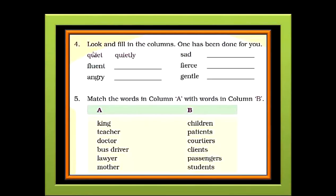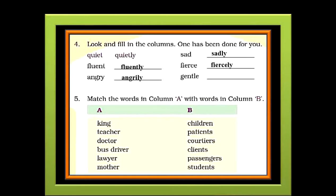Now children, the next exercise is look and fill the columns. One has been done for you. The word quiet becomes quietly by adding 'ly'. So this is the clue here, children. You need to add 'ly' to all the words given here. By adding 'ly' to the word fluent, we get fluently. Similarly, by adding 'ly' to angry, we get angrily. When we add 'ly' to sad, we get sadly. Same is the case with fierce — by adding 'ly', we get fiercely. And the last word here is gentle — by adding 'ly' to this word, we get gently. Here you have formed words by adding the suffix 'ly'. These words that end with 'ly' are called adverbs.